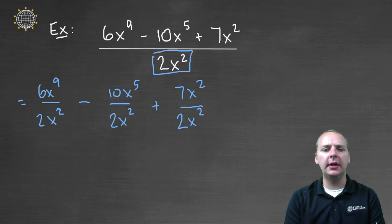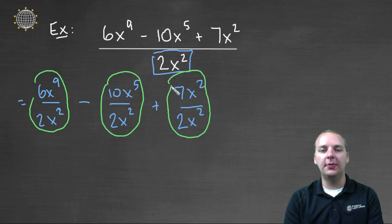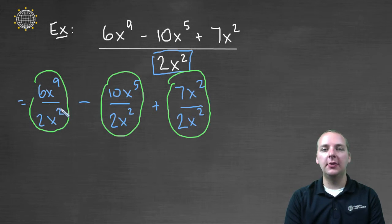Now we're not exactly done, because what we need to do now is take a look at each of these three fractions and see if they can be simplified at all. So we're going to divide the constants and divide the variables. So let's do that.